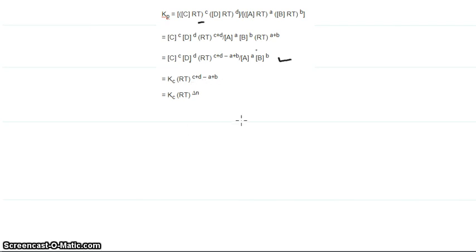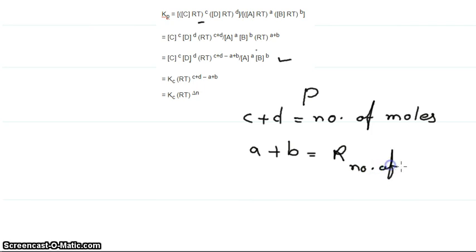But we know that C plus D are the number of moles of products, and we also know A plus B is the number of moles of reactants. As such, we get delta n. If we subtract the second from this, we get the change in the number of moles in the whole reaction.